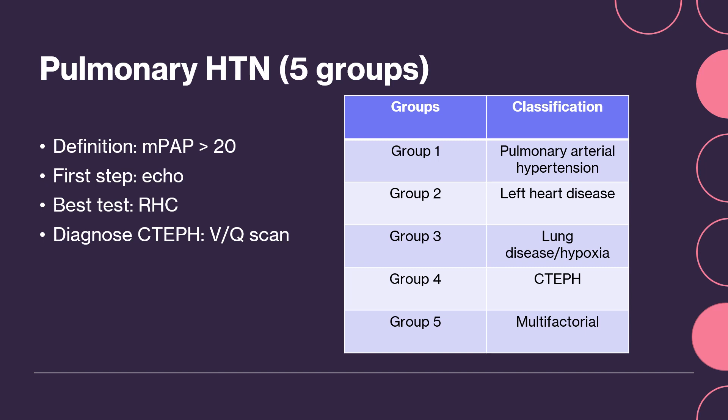Group 4 is chronic thromboembolic pulmonary hypertension, or CTEPH, and pulmonary artery obstructions. Group 5 is multifactorial.